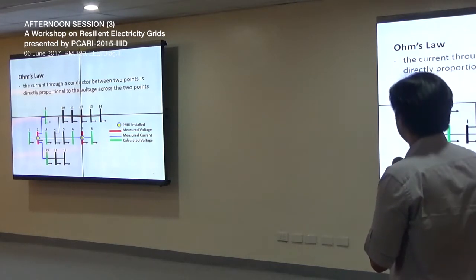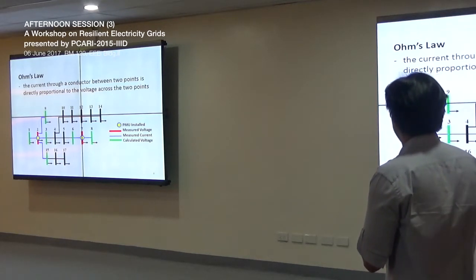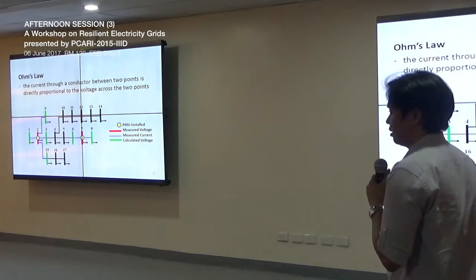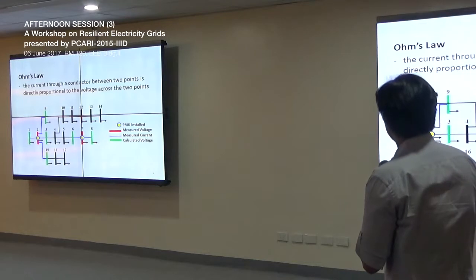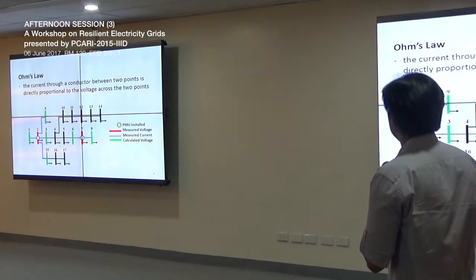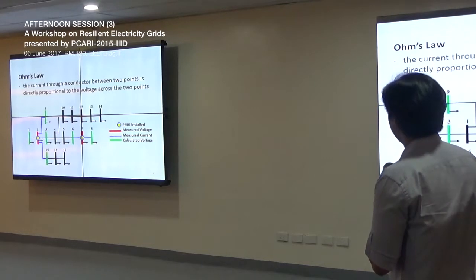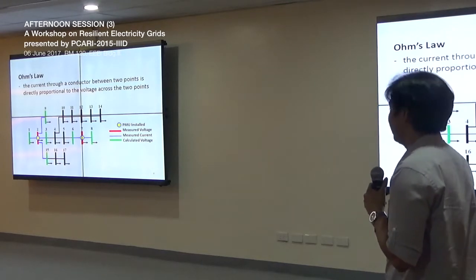For example, the adjacent buses of bus 2 are buses 1, 3, 9, 15, and 6, and bus 8 for the PMU installed at bus 7. So installing a PMU at bus 2 and bus 7 gives us measurements from other buses as well.